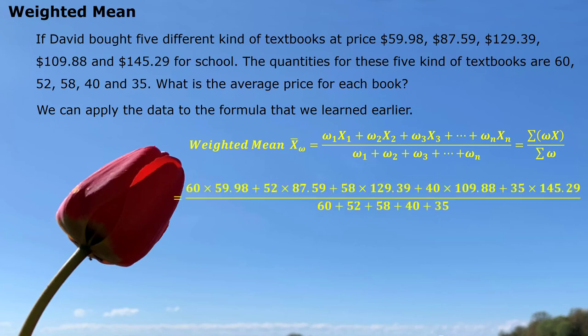We use every value multiplied by its corresponding weight. With the clear background information, we understand: 60 copies, each copy at $59.98 — multiply them together to get how much money was paid for the first kind of textbook. Similarly, we calculate for the second kind, and so on. When we add all products together on top, that's the total money paid; at the bottom, that's the total number of books. Finishing the division, we get the average price of $102.61 for each book.